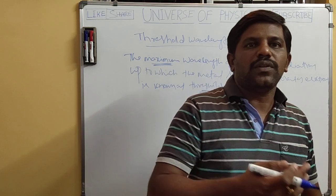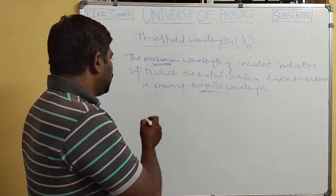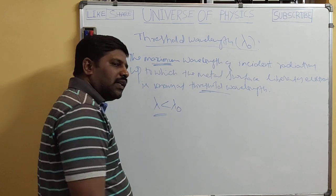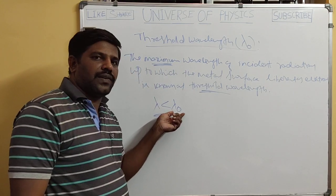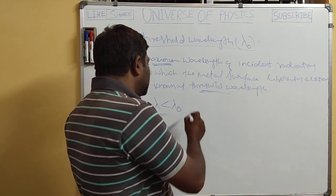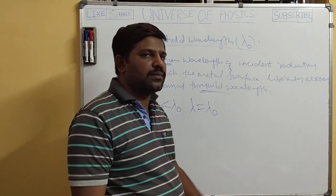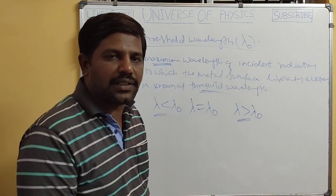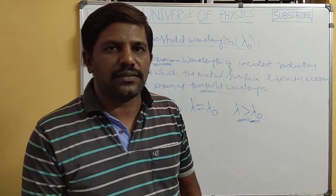There is no emission of electrons from the metal surface above the threshold wavelength. If the incident radiation wavelength λ is less than λ₀, we can get electrons from the metal surface. If λ equals λ₀, we can still get electrons. But if λ is greater than λ₀, no electrons are emitted, because λ₀ is the maximum wavelength.